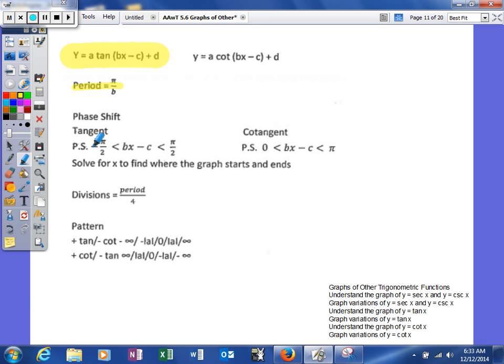Now our phase shift for tangent is a little bit different. You can see here's our phase shift for tangent. For sine and cosine, we would put 0 here and 2π here. In the middle, it's going to be still the same. And then it would be less than or equal to as opposed to greater than or less than.